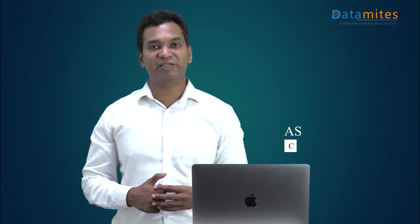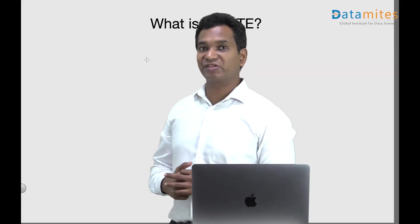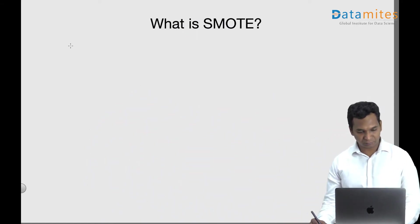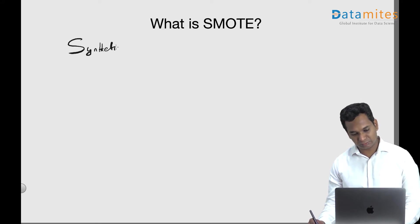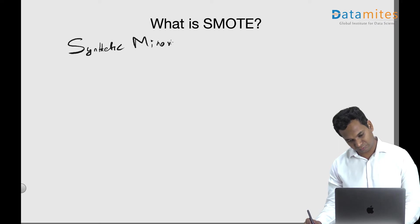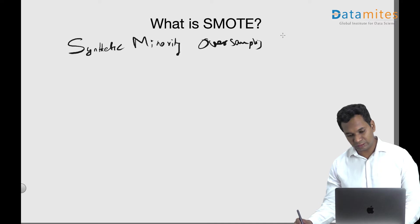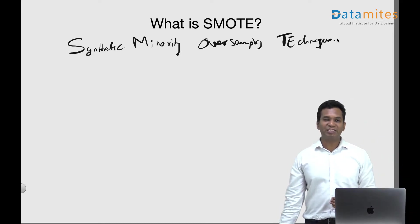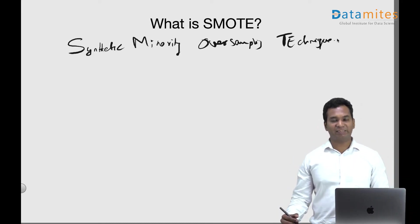Hello everyone, I'm Ashok. Welcome to another video on the machine learning data science terminology series. In this video we look at what is SMOTE. SMOTE stands for Synthetic Minority Oversampling Technique. It's used to balance out a dataset.